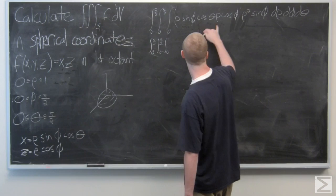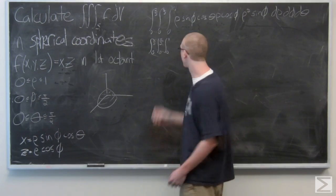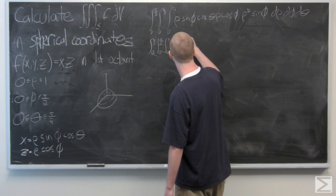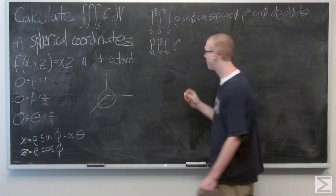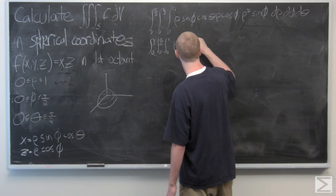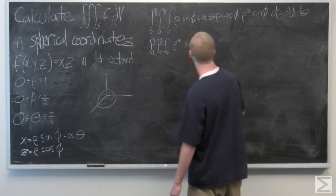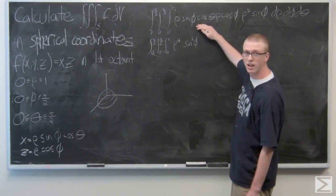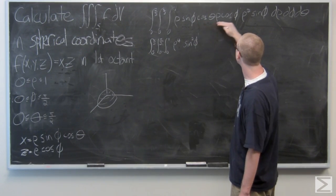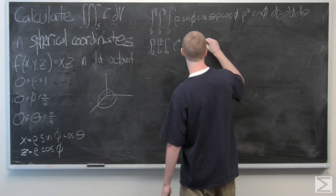So we have four rhos up here, all multiplied together, rho to the fourth. We also have a couple of sine phi's. And it looks like everything else is by itself: cosine theta, cosine phi. So that's all we can simplify.